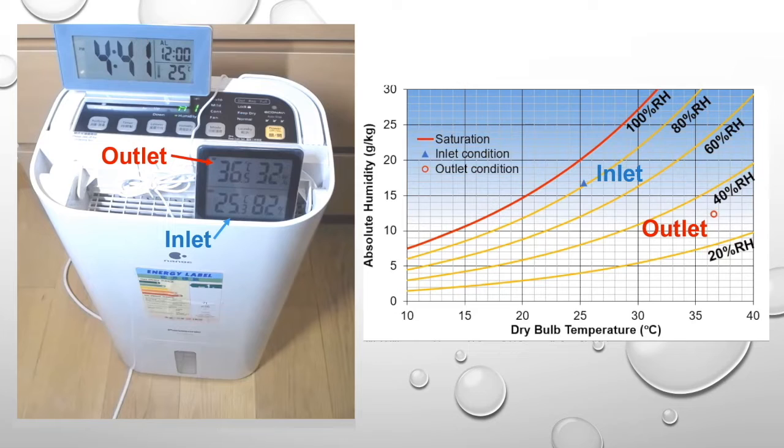The condition of air of the inlet and outlet are marked on the psychrometric chart on the right, and we can see the changes in real time. Since our test is going to run for 2 hours, we have sped up the video here 120 times.